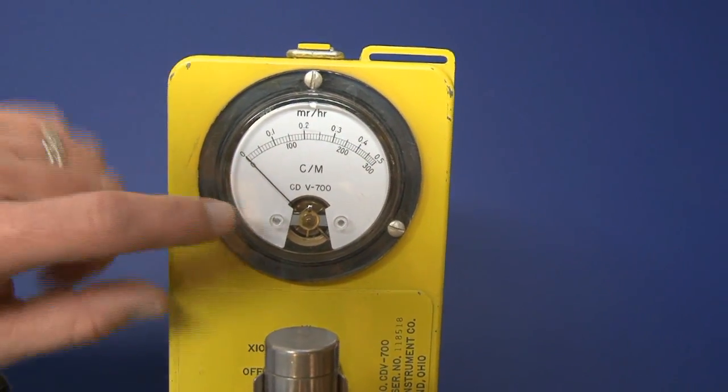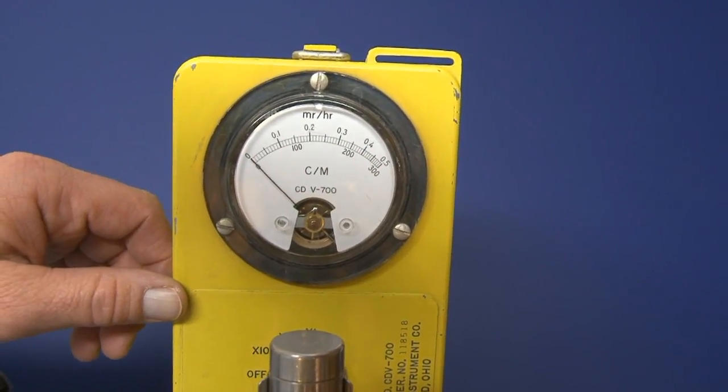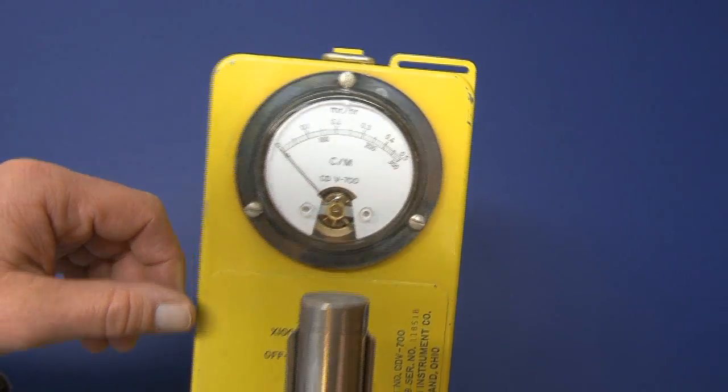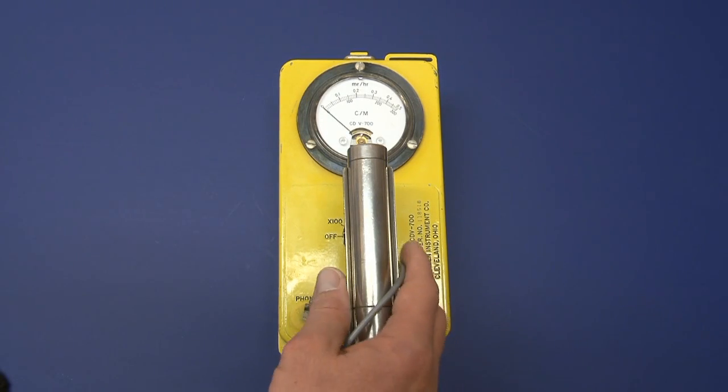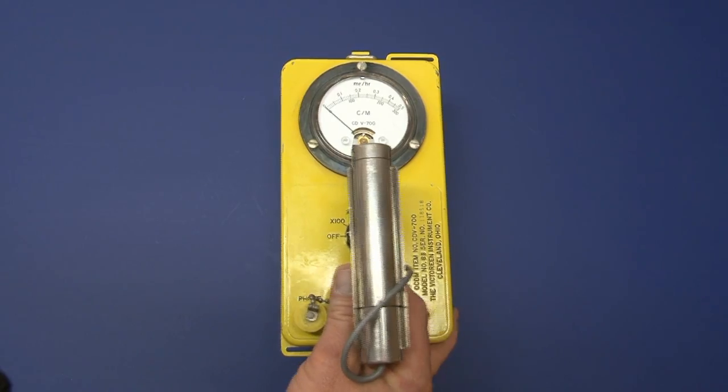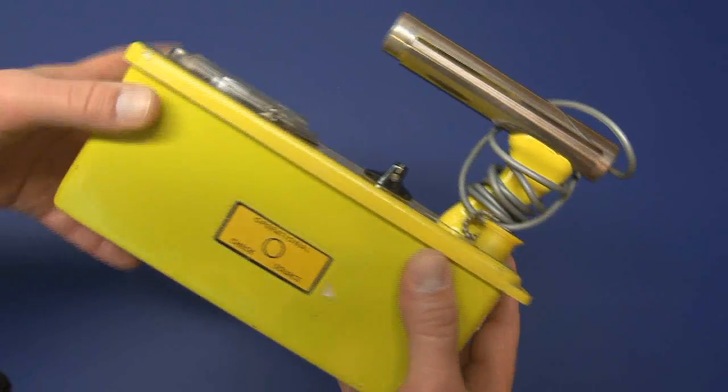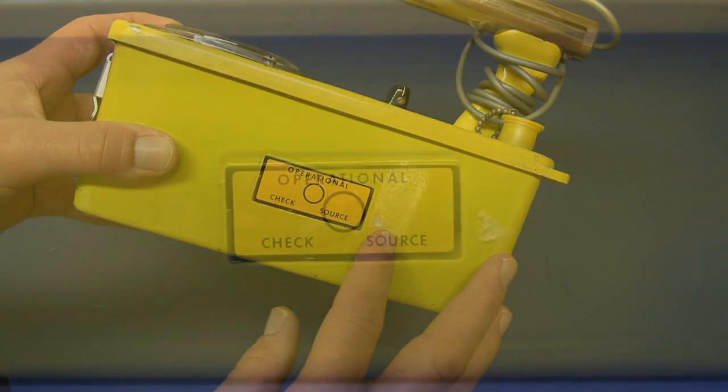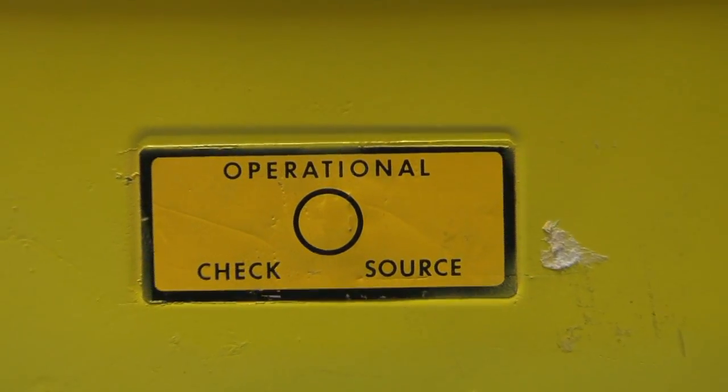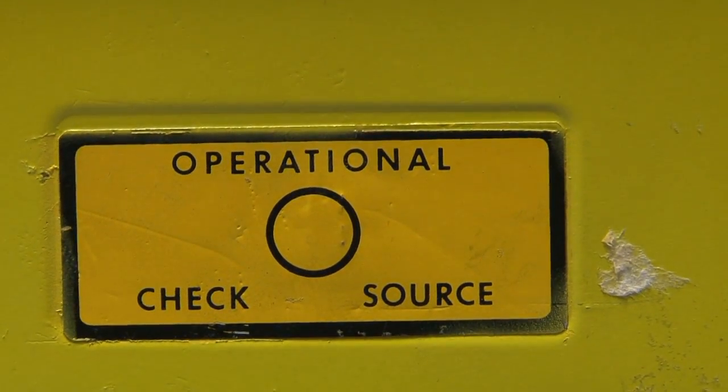Now before we use this instrument one of the things we want to do is we want to perform an operations check or a source check. These instruments usually have an operational check source on the side.